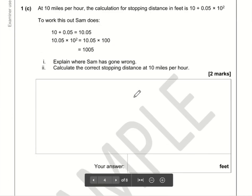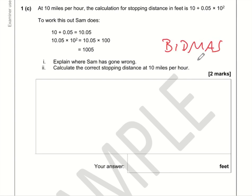Okay, at 10 miles per hour, the calculation for stopping distance in feet is 10 + 0.05 × 10². To work this out, Sam does 10 + 0.05 to get 10.05, and then he's multiplied by 100. Where is Sam gone wrong?